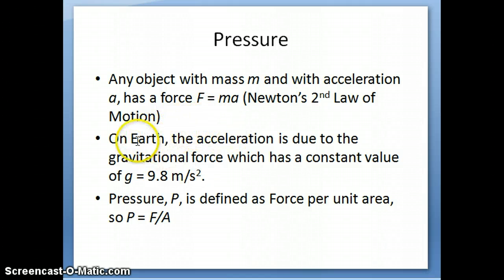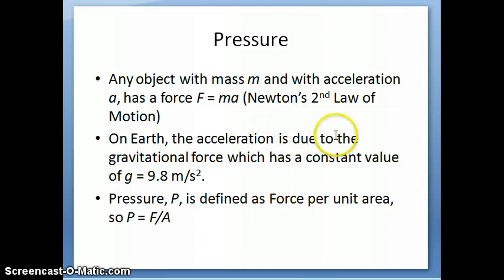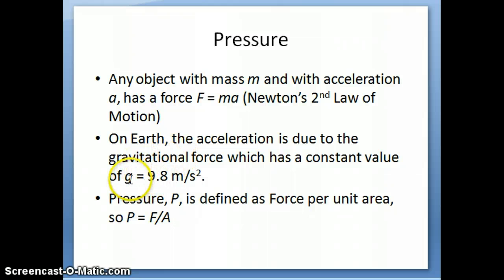Now on Earth, every object that is falling is accelerated — it's changing its velocity — and it has a constant acceleration. That value is due to the gravitational force that Earth exerts on the object. That constant value is often given the symbol g, and it has a value of 9.8 meters per second squared.